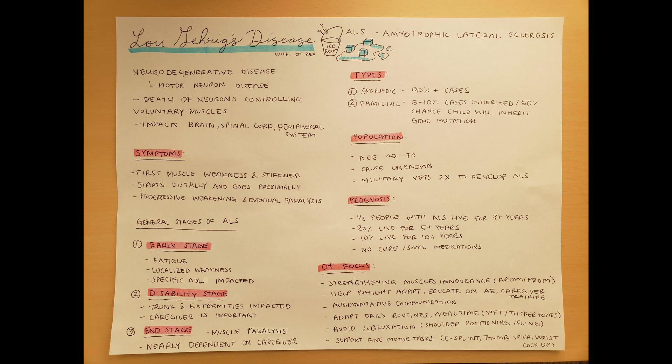The general stages of ALS break down into three categories. The early stage involves some fatigue and very specific, localized weakness, meaning not all ADLs will be impacted — only daily living skills specific to that localized weakness. For example, if you have weakness in your fingertips, something like toothbrushing might become a challenge. If you have weakness in your legs, putting on pants might be inhibited since you have to balance on your feet.